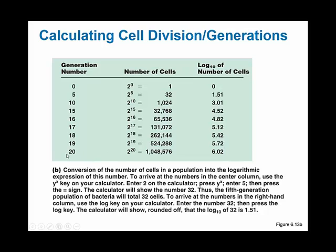If you go 20 generations, you end up with well over a million individual cells. Calculating this, even starting from just one cell, is difficult to do manually, so we use a scientific calculator. You can test your calculator with this formula to make sure you're entering the keystrokes correctly and getting the expected number.